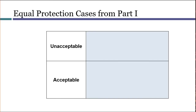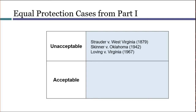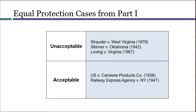Here are some cases holding that inequality violated the Equal Protection Clause: Strauder v. West Virginia, where only white people could serve on juries; Skinner v. Oklahoma, where some three-time felons but not others would be involuntarily sterilized; and Loving v. Virginia, where only people of one race could marry other people of that race. However, there were other cases where types of inequality were acceptable. The law in Carolene Products regulated the makers of filled milk differently than the makers of margarine. The law in Railway Express Agency regulated advertisers who owned their own trucks differently from advertisers who used other people's trucks. And in Williamson v. Lee Optical, the law treated opticians differently than optometrists.